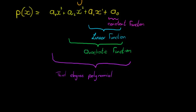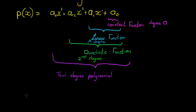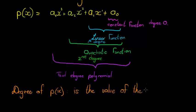So what is the degree of a polynomial? Let's see if you can figure it out. This would be a second degree polynomial. That one would be a first degree polynomial. And a constant function will be a polynomial with a degree of zero. I'm sure you could see that the degree of a polynomial p(x) is the value of the highest exponent.